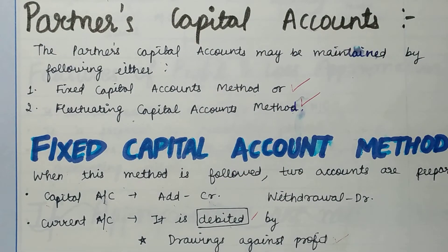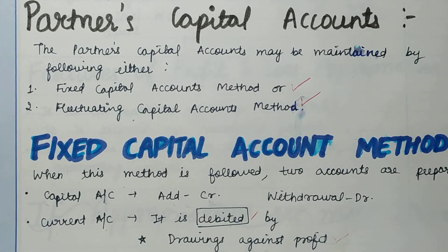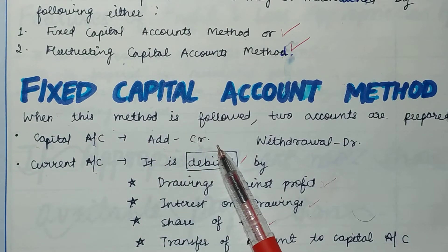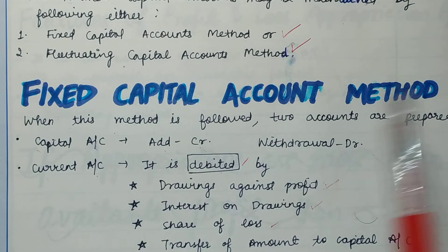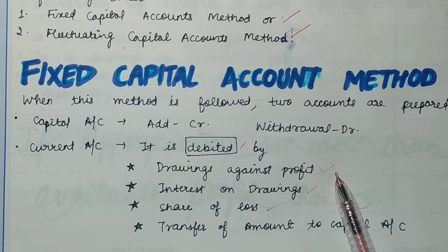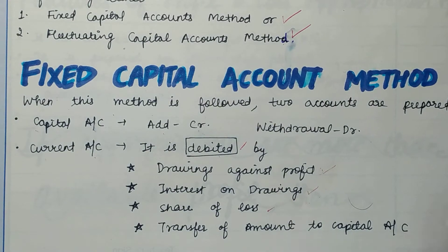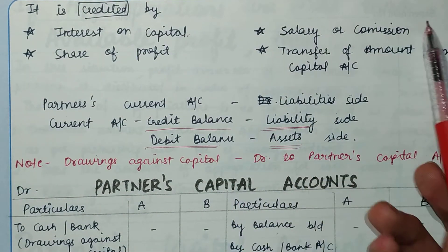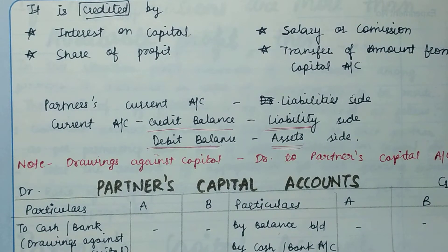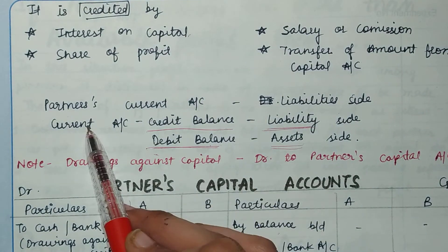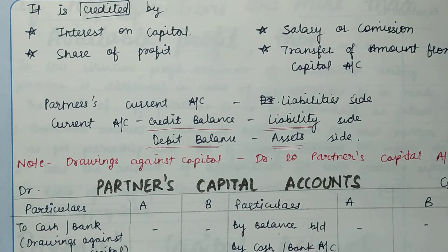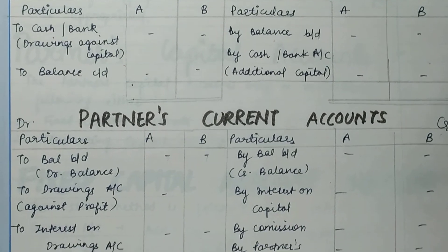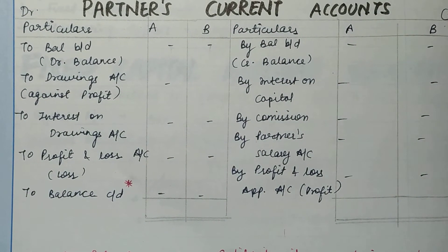Let's recap. For partners' capital accounts, there are two methods: fixed and fluctuating. Under fixed capital, you prepare two accounts. In the capital account: credit for additions, debit for withdrawals. In the current account: debit for drawings against profit, interest on drawings, and share of loss; credit for interest on capital, share of profit, salary, and commission. If the current account has a credit balance, show it on the liability side; if debit balance, show it on the asset side.